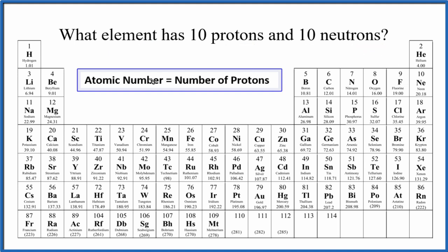What we need to know is that the atomic number equals the number of protons. So we have 10 protons. If we can find atomic number 10, we'll know which element has 10 protons and 10 neutrons.